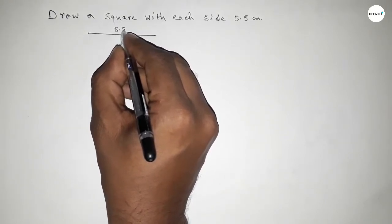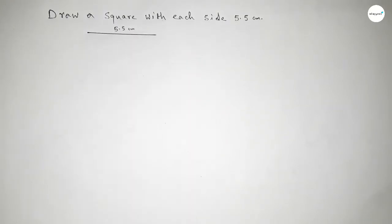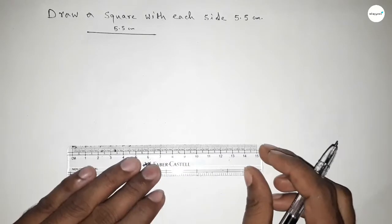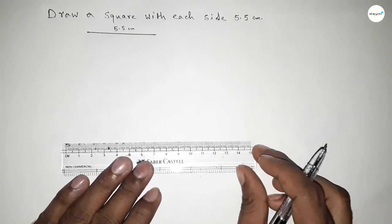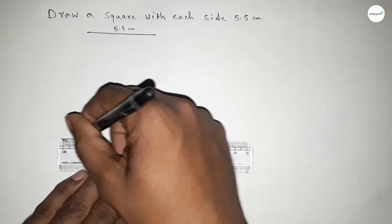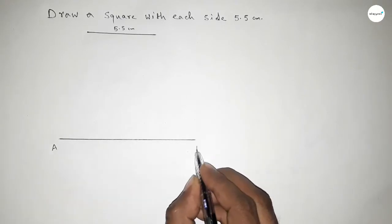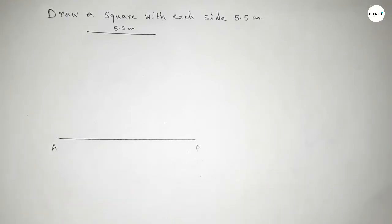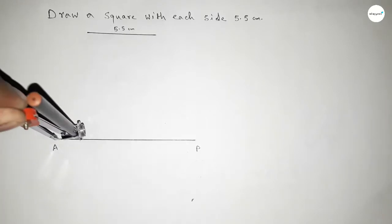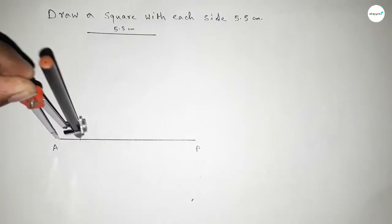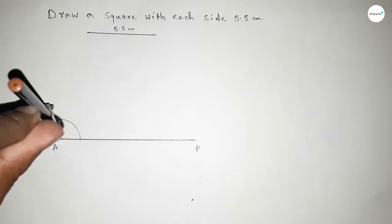This is 5.5 centimeters. Next, drawing here a line of any length and taking this point as A and P. Now we have to draw a 90 degree angle on point A, so taking any length by compass and drawing an arc.